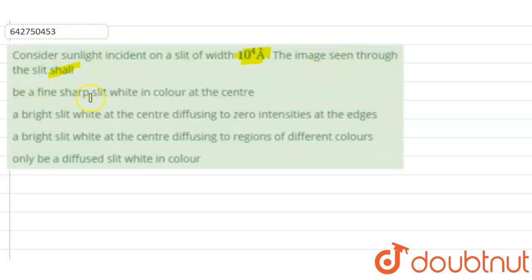The options are: (a) a fine sharp slit white in color at the center, (b) a bright slit white at the center diffusing to zero intensities at the edges, (c) a bright slit white at the center diffusing to regions of different colors, and (d) only a diffused slit white in color.